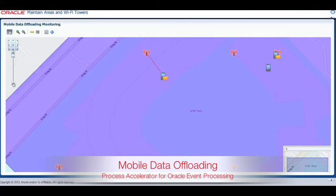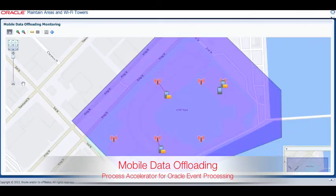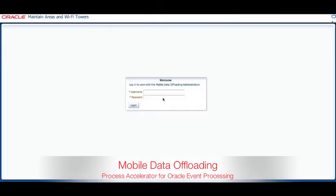This process accelerator uses Oracle Event Processing with its embedded spatial capabilities to process the streaming data in memory to make efficient decisions on extremely high volumes of data.